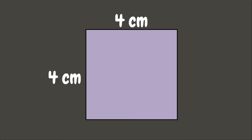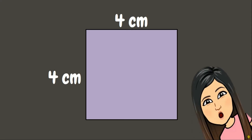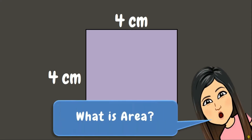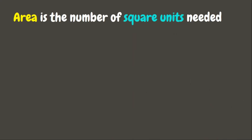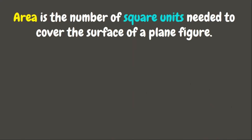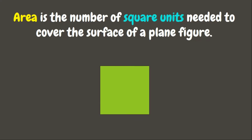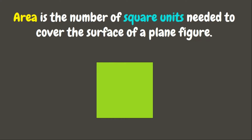We have here a square whose side measures four centimeters. Now let us determine its area. Do you know what area means? Area is the number of square units needed to cover the surface of a plane figure. A square unit is a square whose each side measures one unit.